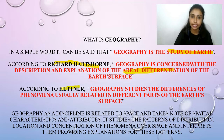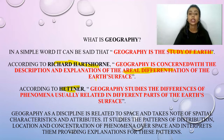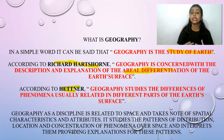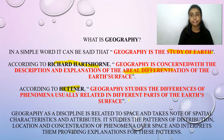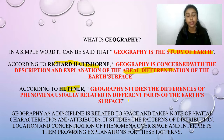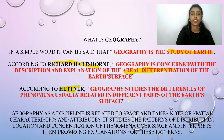According to Heitner, one of the greatest geographers, geography studies the differences of phenomena usually related in different parts of the Earth's surface. It means different phenomena, different places, different types of physical environment — on the outside surface, different festivals, different communities, like mountains and deserts. How we carry out a place — that is what geography addresses.